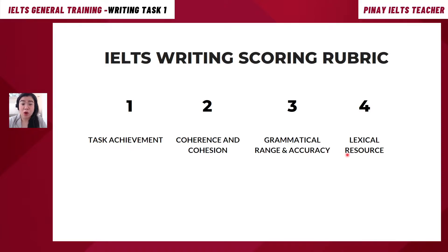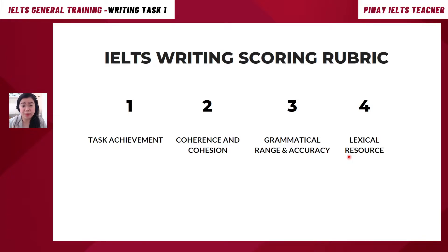The last scoring rubric is Lexical Resource — another way of saying your vocabulary. Were you able to use words related to the topic, higher-level English words that could support the ideas you want to share or write in your IELTS test? I will upload a separate video going into detail about the scoring rubrics, but today we just want to find out what Writing Task 1 of the General Training test is about.